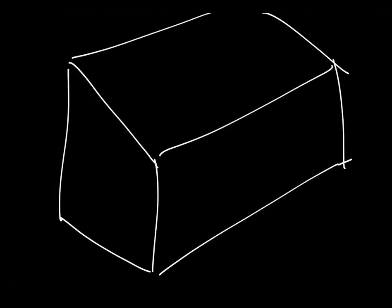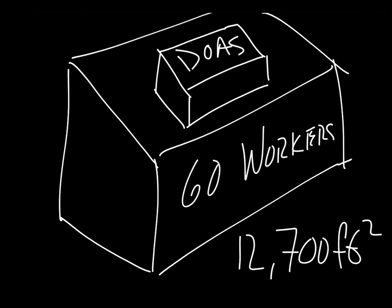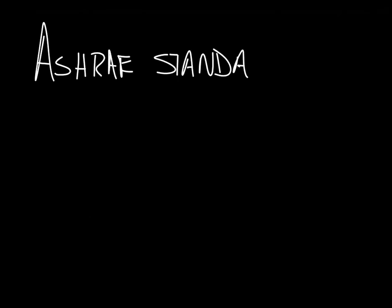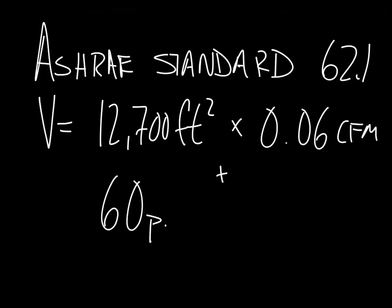If we take a hypothetical office building of 12,700 square feet, being fed by a dedicated outdoor air system with 60 workers, the minimum ventilation rate per ASHRAE standard 62.1 is calculated by the square footage times 0.06 CFM per square foot. In addition to the outside air per square foot,